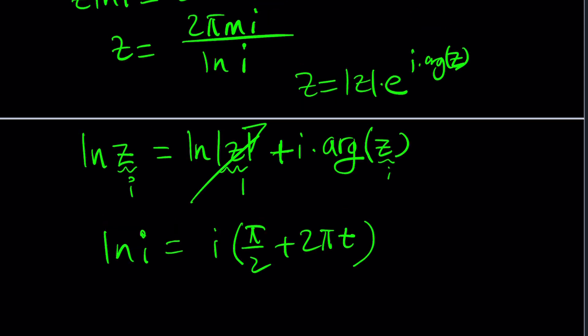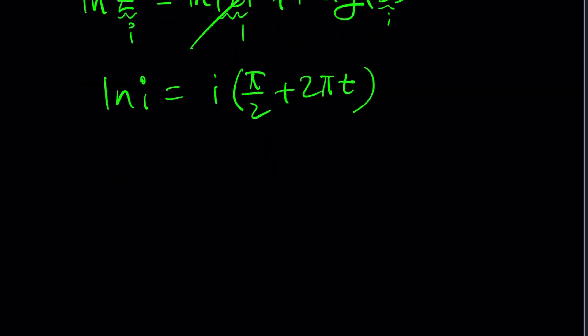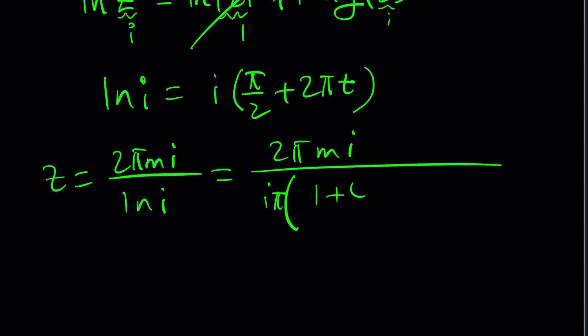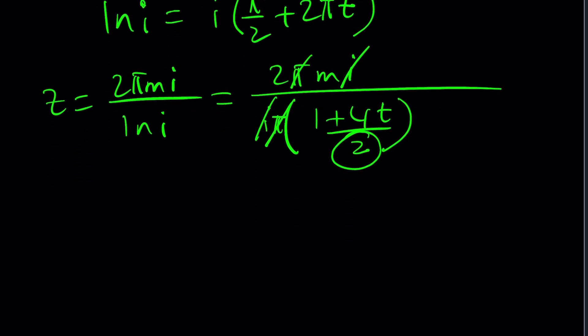Let's substitute that here. Z equals 2πMi divided by ln i, which is 2πMi divided by i times—I'm going to make a common denominator and take out the π—(1 + 4T)/2. i π cancel out. This 2 will be flipped and multiplied, and multiply by M. Z is going to be 4M divided by 4T + 1.